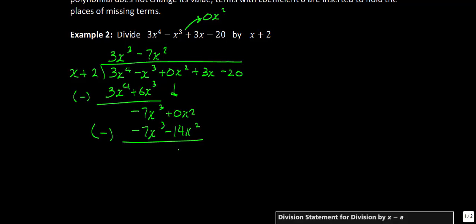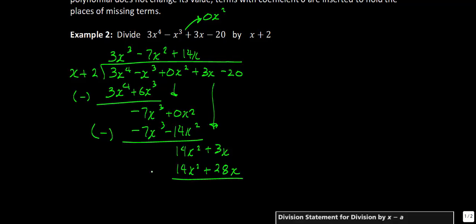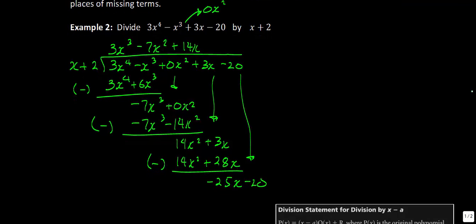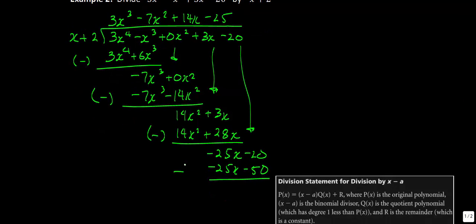0 minus negative is going to give you a positive 14x squared. Bring down our 3x. x times 14x gives you 14x squared, and 14x times 2 is 28x. Again we're subtracting: 3x minus 28x is negative 25x. Bring down our last term. The negative 20 gives us x times negative 25. Negative 25 times x is negative 25x, and negative 25 times 2 is negative 50. We have a remainder of negative 20 minus negative 50, which gives you 30.